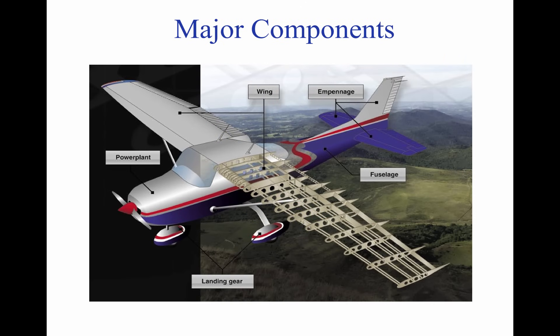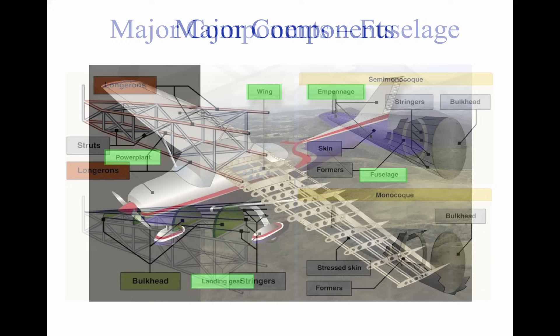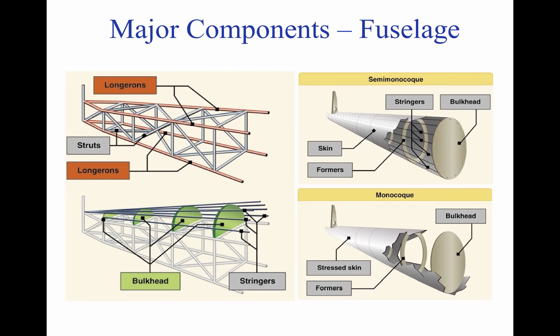Although airplanes are designed for a variety of purposes, most of them have the same major components. Most airplane structures include a fuselage, wings, an empennage, landing gear, and a power plant. The fuselage is the central body of an airplane, and is designed to accommodate the crew, passengers, and cargo. It also serves to connect all the other main components of an aircraft.